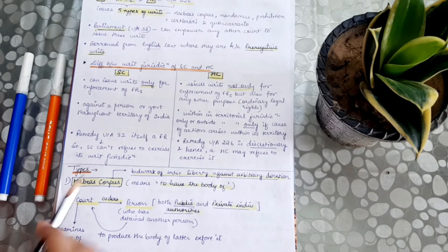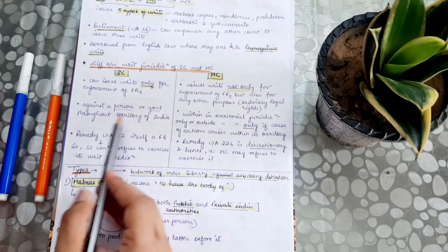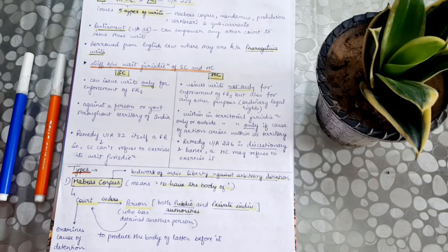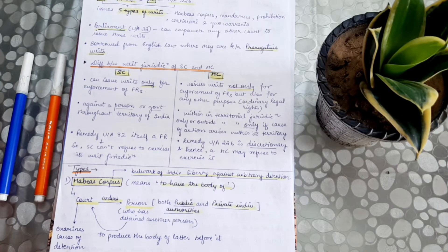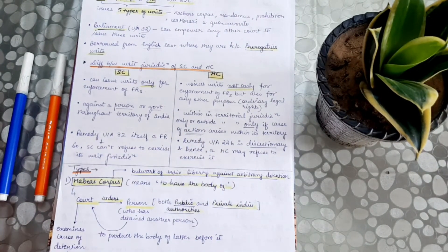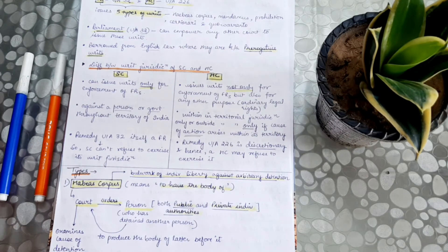Another difference is that the Supreme Court can issue writs against a person or a government throughout the territory of India, because the Supreme Court's jurisdiction covers the entire territory. But the High Court's territorial jurisdiction is narrow — a particular state's High Court can issue writs within its territory. If the cause of action arises outside its territorial jurisdiction, it can only issue writs if the cause of action partially falls within it.